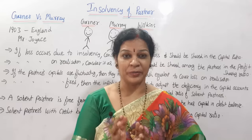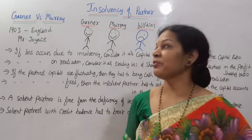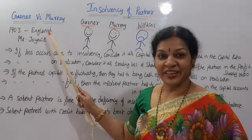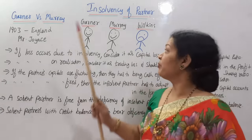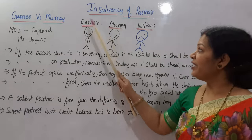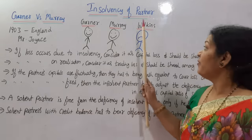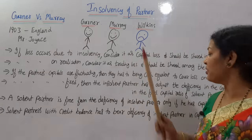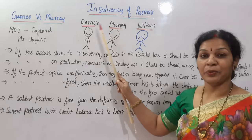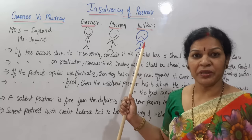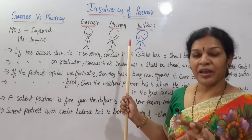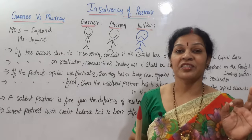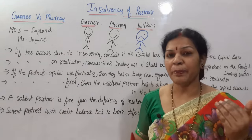This is the introduction class of insolvency; the next class will work out problems. What happened in this Garner versus Murray case - it happened in the year 1903 in England. The case was related to three partners: Garner, Murray, and Wilkins. Garner and Murray were both solvent partners. When the third partner Wilkins became insolvent, the question was: who has to bear his loss? That was the problem between Garner and Murray - they were fighting and went to court.